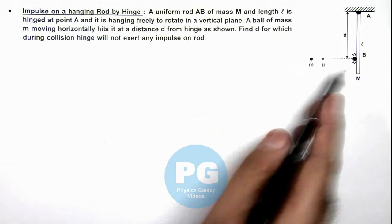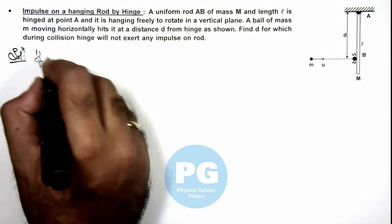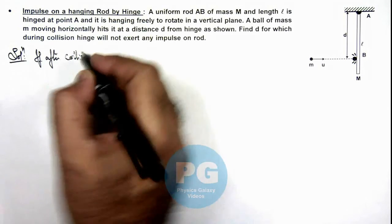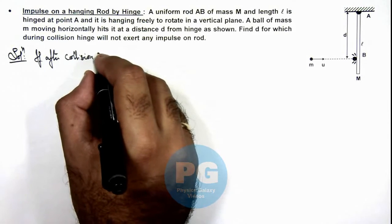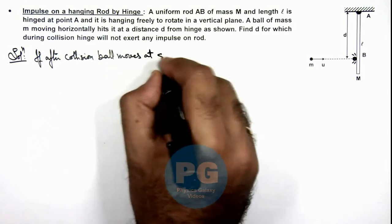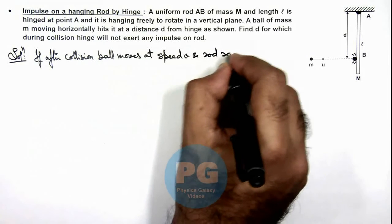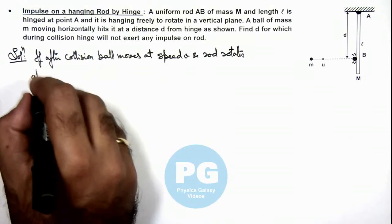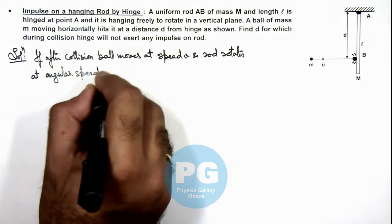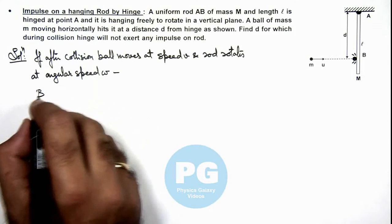And in this situation here, we can analyze that if after collision, ball moves at speed v and rod rotates at angular speed omega, then in this situation we can write by conservation of angular momentum.